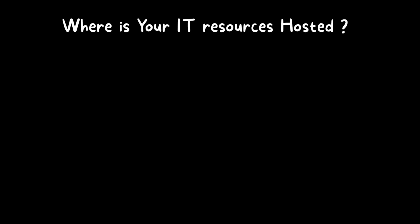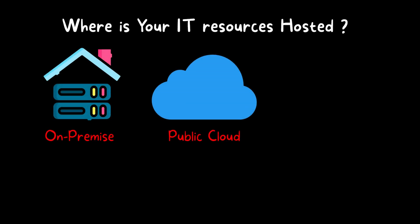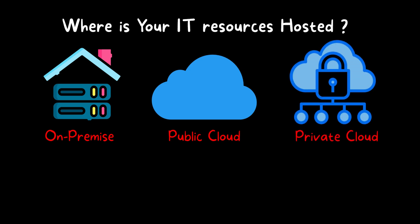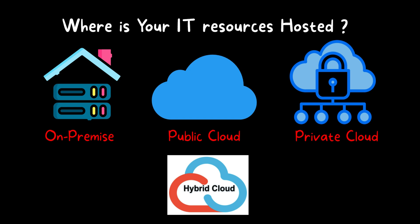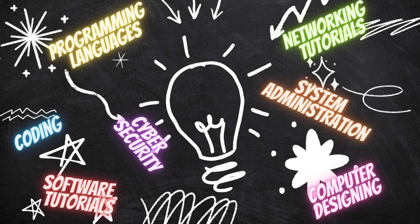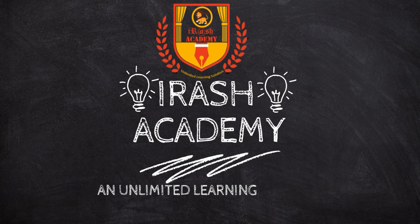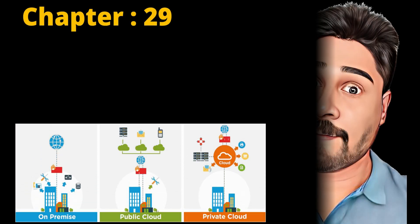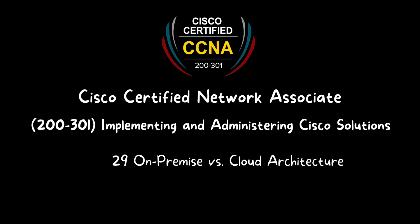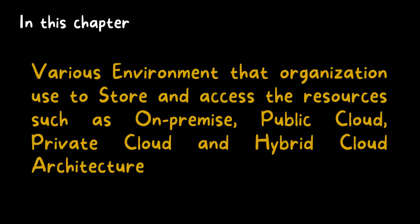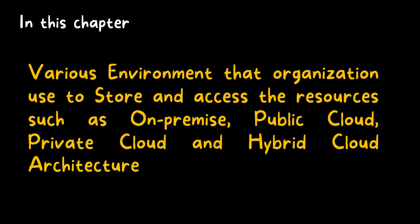Where are your IT resources hosted? Is it in on-premise, public cloud, private cloud, or hybrid cloud? If you don't know the difference between these different infrastructure setups, then this video is for you. Welcome to CCNA 200-301, Implementing and Administering Cisco Solutions, Chapter 29: On-Premise versus Cloud Architecture. In this chapter, we will discuss the various environments that organizations use to store and access resources, such as on-premise, public cloud, private cloud, and hybrid cloud architecture.